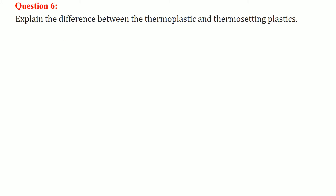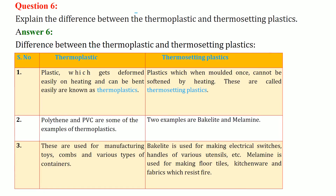Explain the difference between thermoplastic and thermosetting plastic. Thermoplastic gets reformed when heated and can be bent easily. Thermosetting plastic, once molded, cannot be softened by heating — it is permanently set.